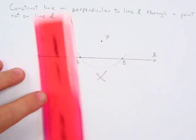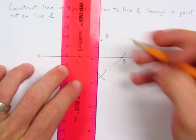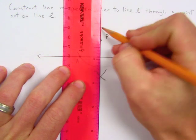Alright, your next step would just be to use a straight edge and draw a line from point P through your intersection.